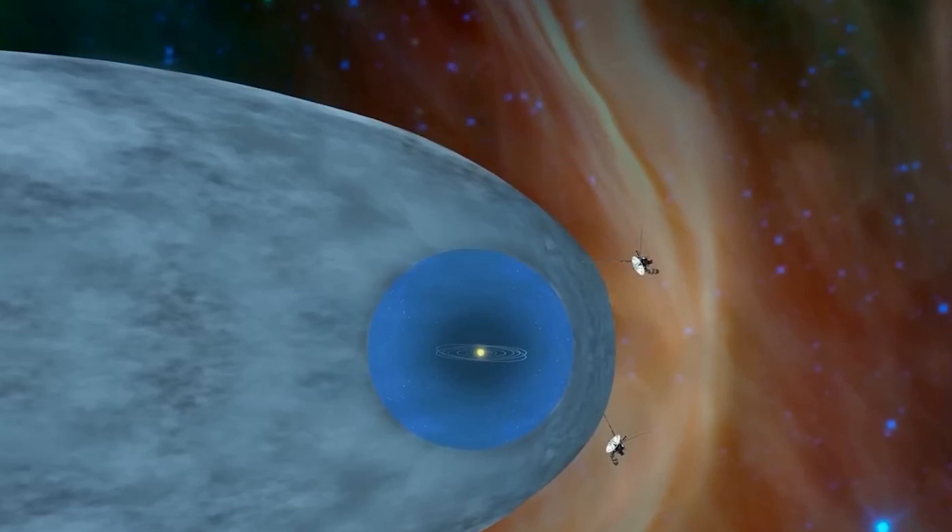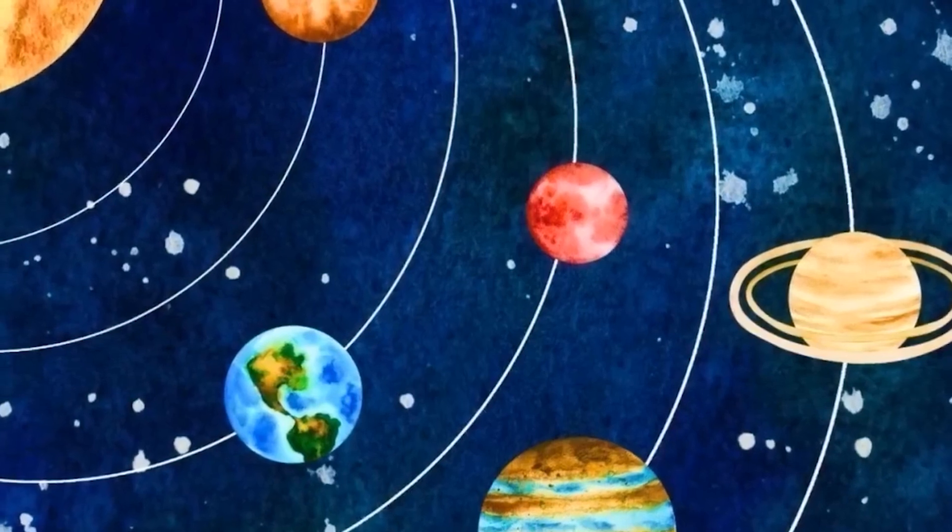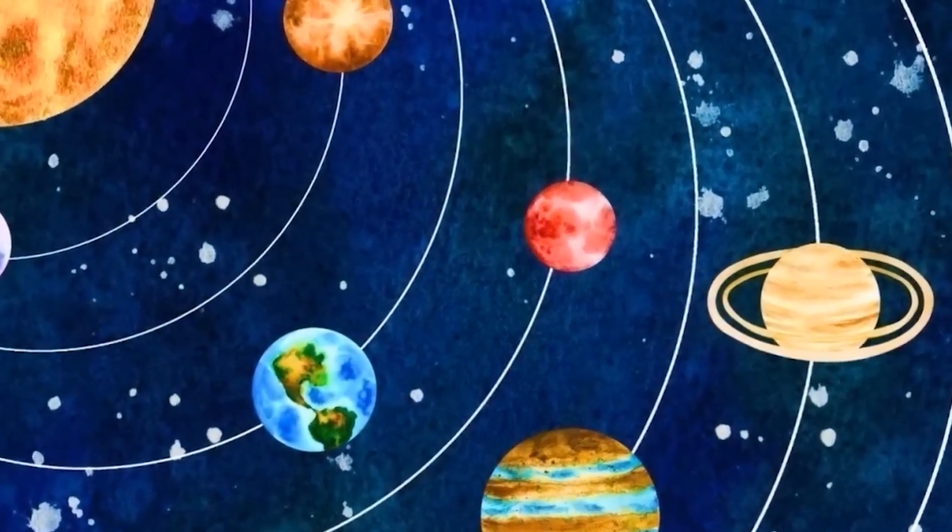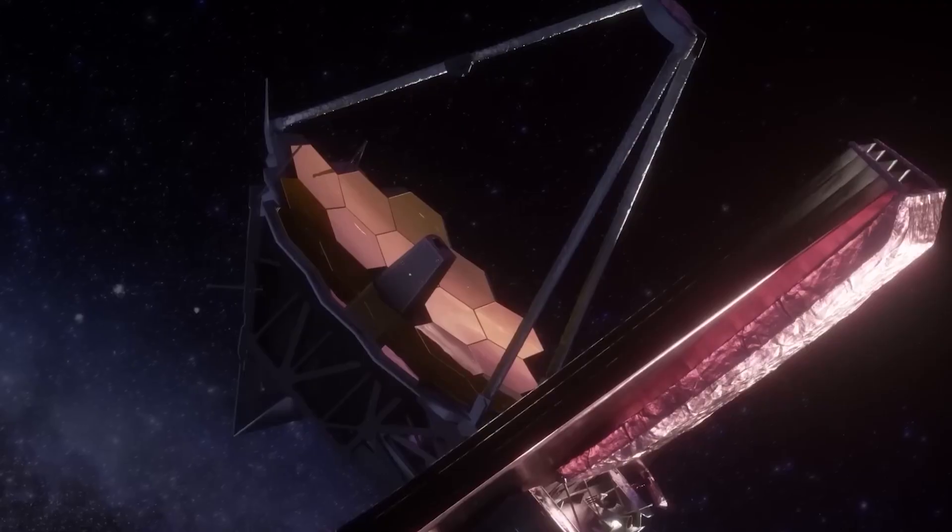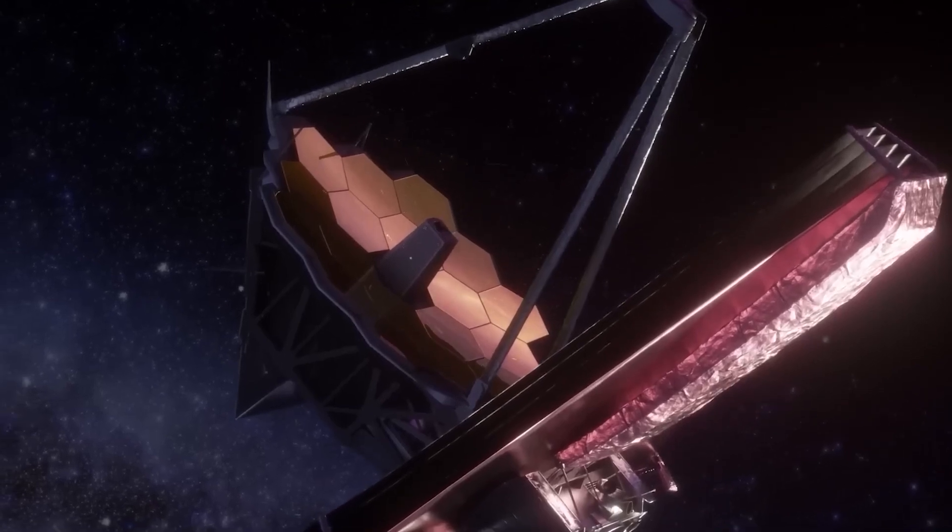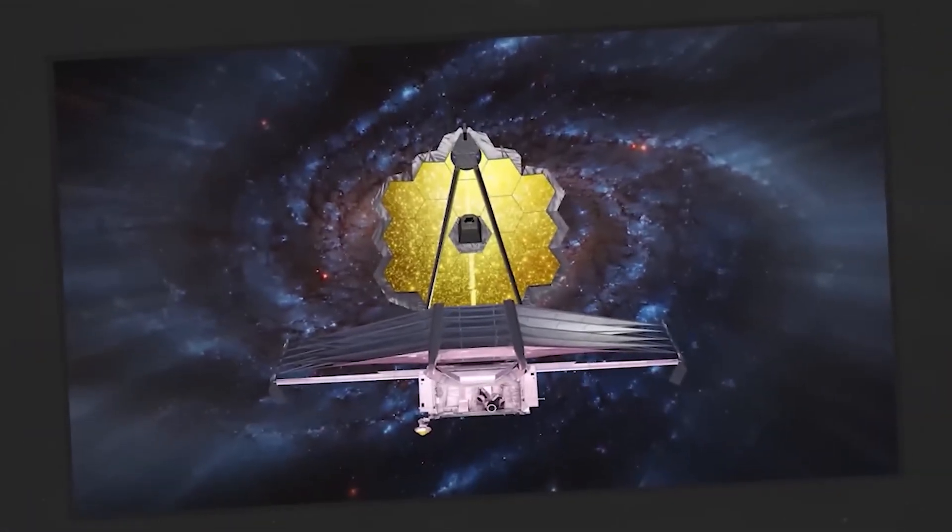What if everything we thought we knew about the universe is wrong? The James Webb Telescope just found galaxies that are too big, too old, and too evolved to exist. It's detecting signals from beyond the edge of space. A strange pulse, like a heartbeat,